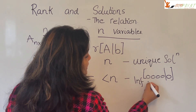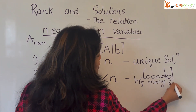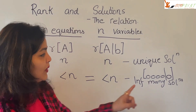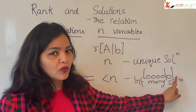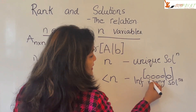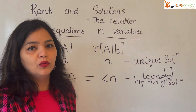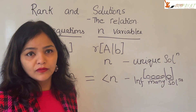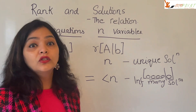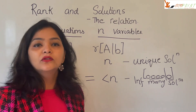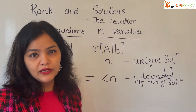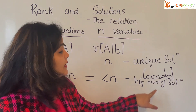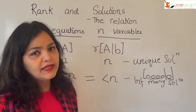When the ranks are equal and less than n, this leads to infinitely many solutions. Why? Because having an entire zero row in the augmented system means the left-hand side is zero and the right-hand side is also zero, which means consistency. Since it is a consistent system of equations, you will have solutions — and specifically, infinitely many solutions.